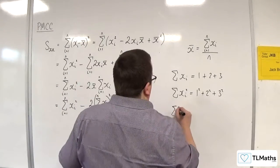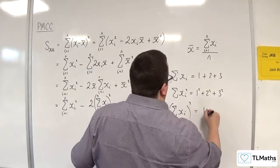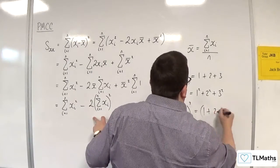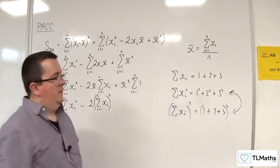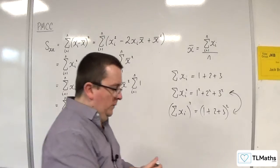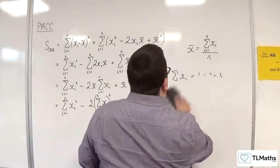Whereas the sum of the XI's all squared is 1 plus 2 plus 3 all squared. So these two things here are different - they mean different things. That was just for clarification there.